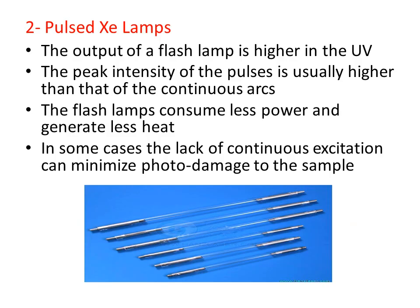Another source is the pulsed xenon lamp, whose output is produced in the form of pulses or flashes rather than continuously. The output of a flash lamp is higher in the UV region. The peak intensity of these pulses is usually higher than that of continuous arc lamps. Flash lamps consume less power and generate less heat. Another advantage is that the lack of continuous excitation can minimize photo damage to the sample.